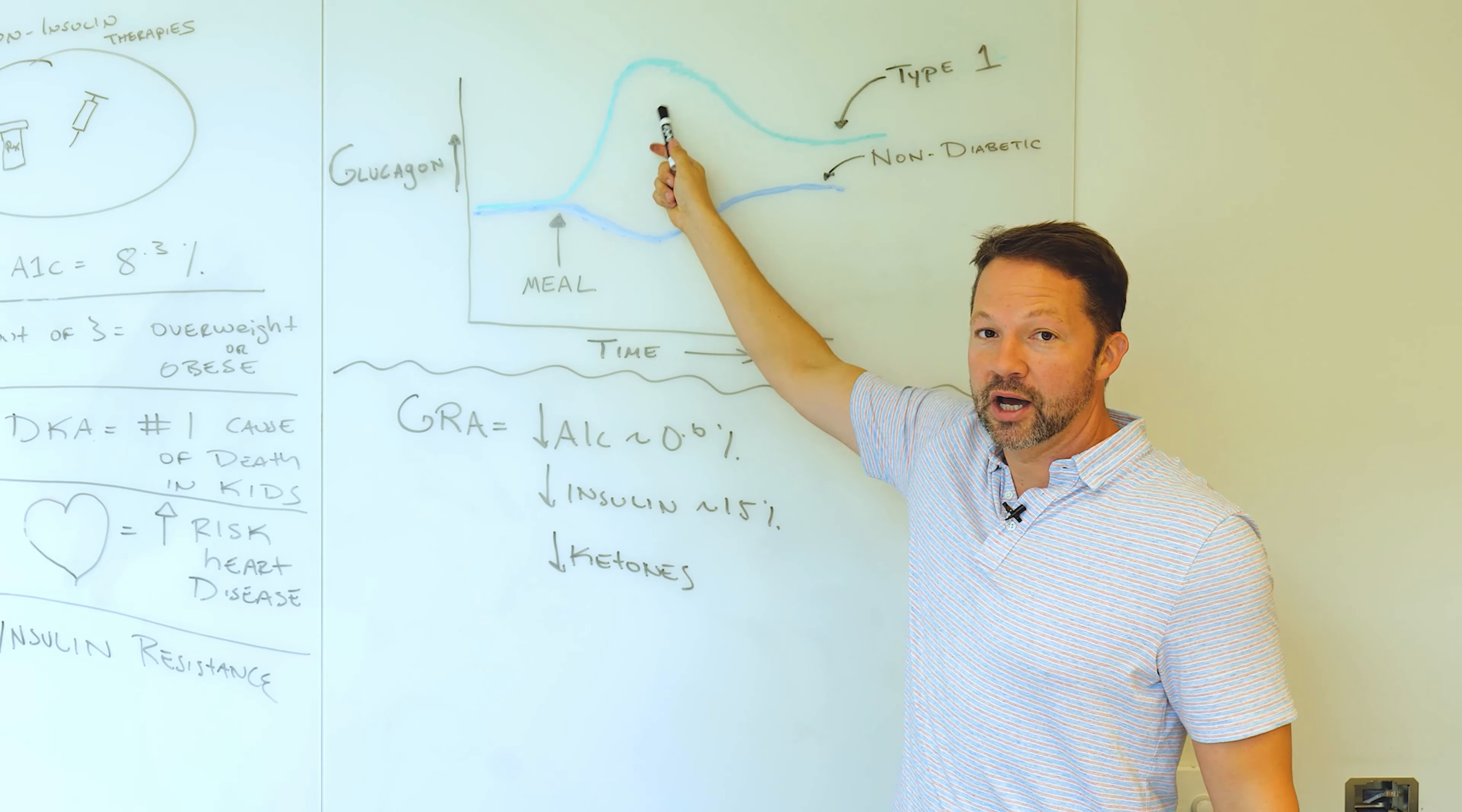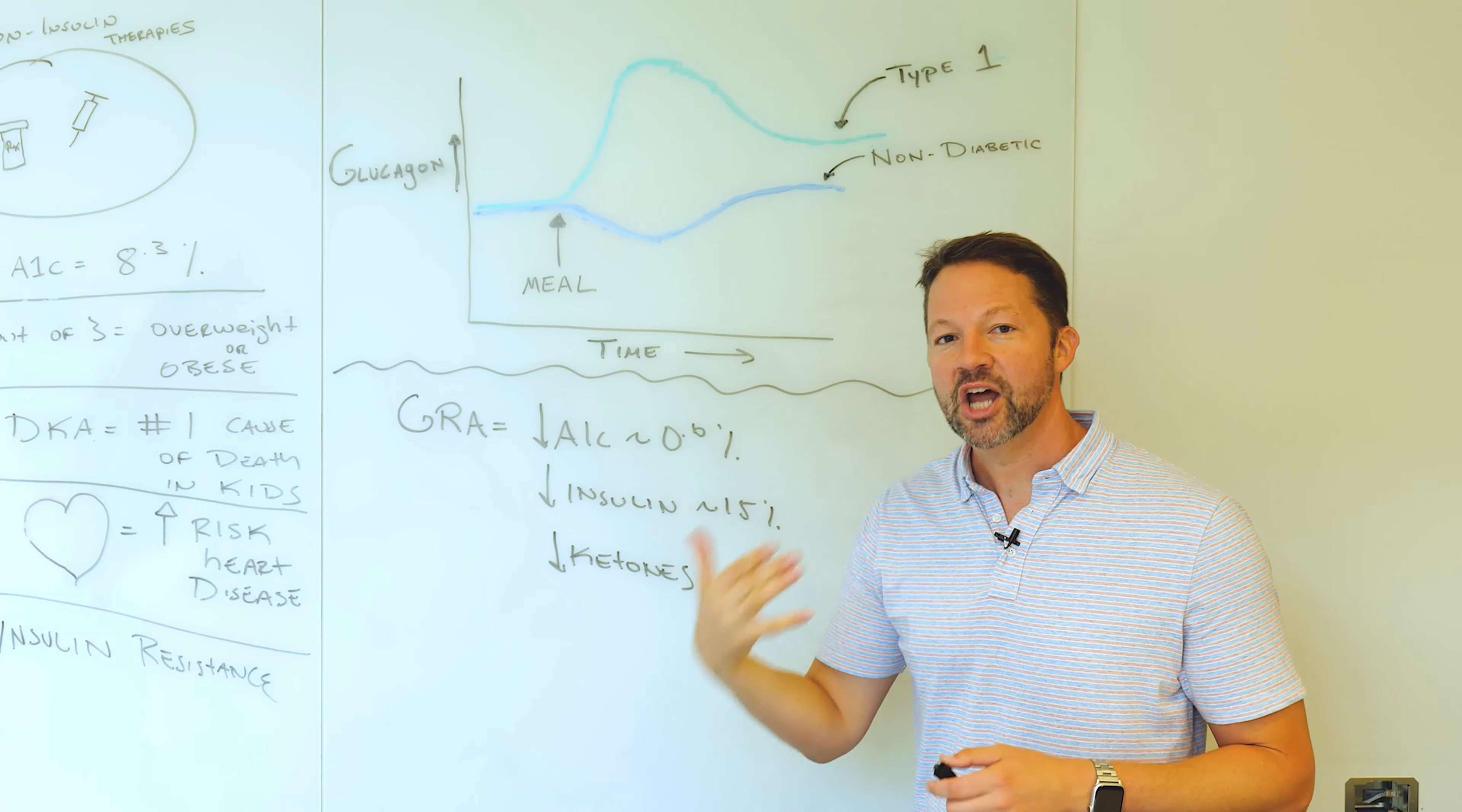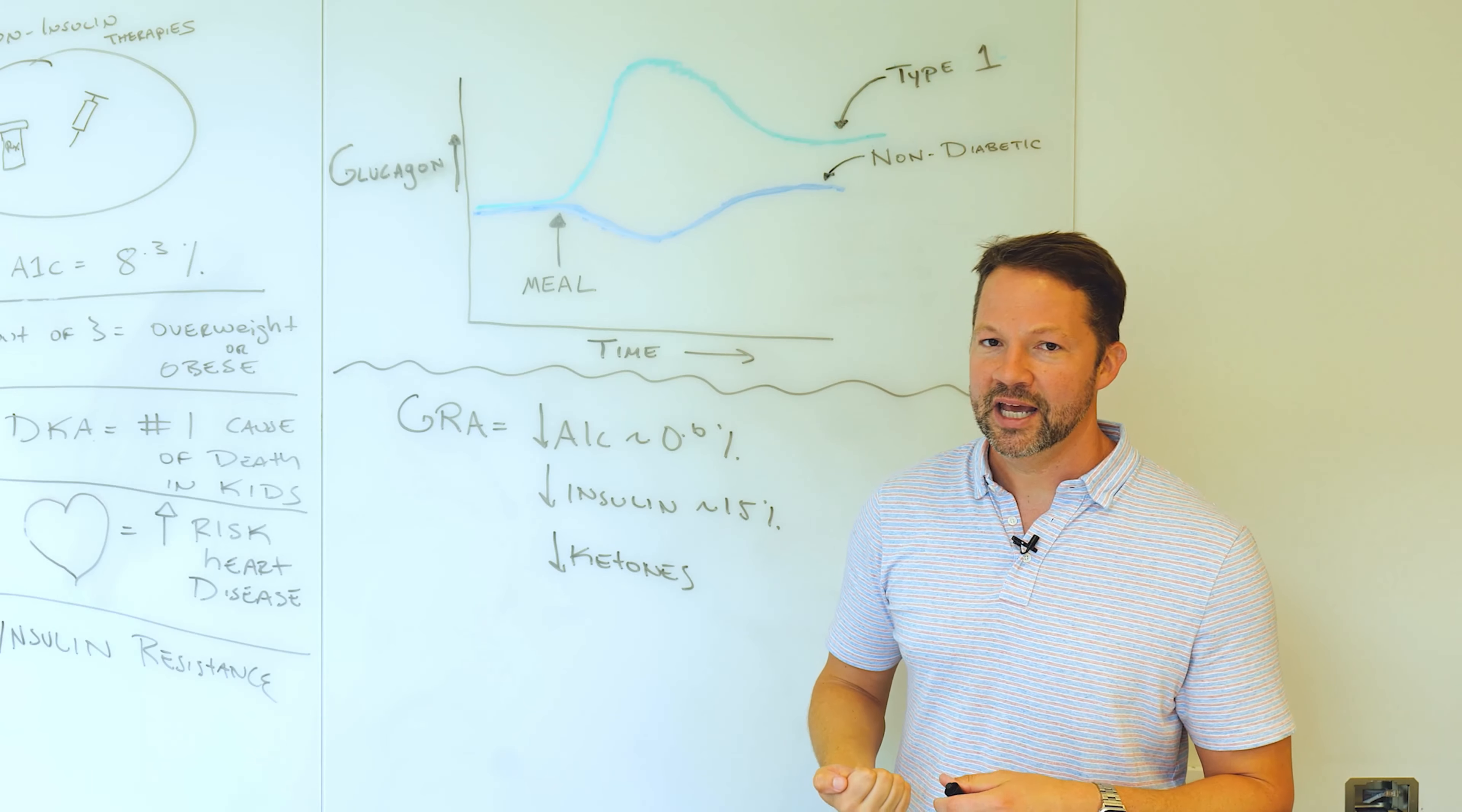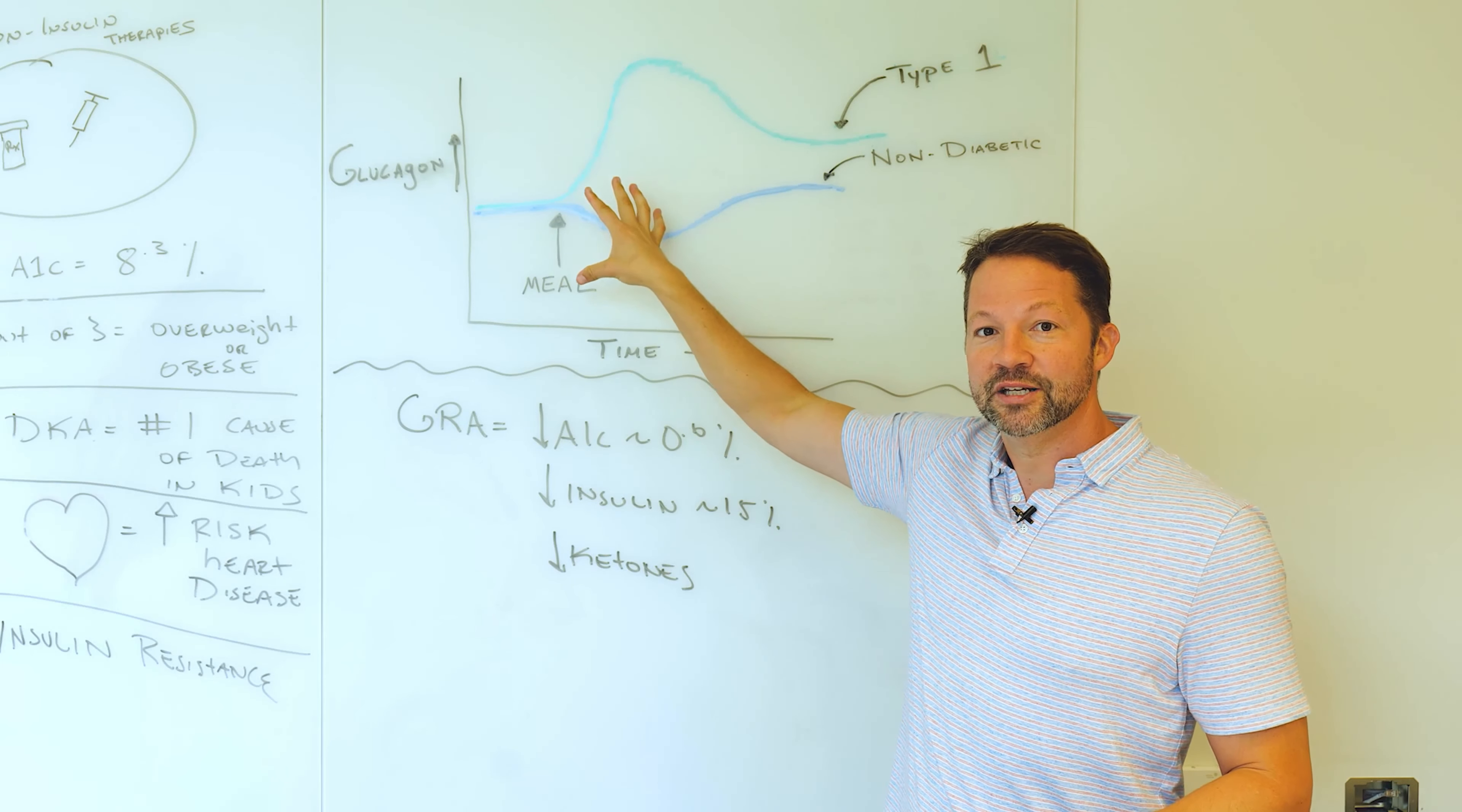And this increase in glucagon actually makes your liver put out more glucose. So this is another reason why it's really hard to fight that spike after eating because our insulin is delayed with its absorption. You're secreting too much glucagon. There's a lot of things that you're fighting against.